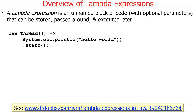So what is a lambda expression? A lambda expression is basically an unnamed block of code which can take parameters, and you can use this to store, pass, and execute this code later in a program. So let's take a look and see how this might be used.